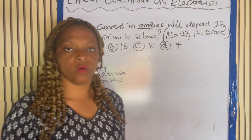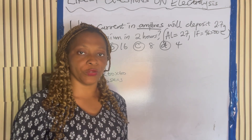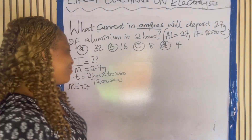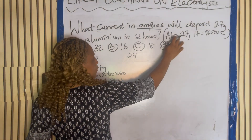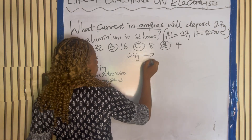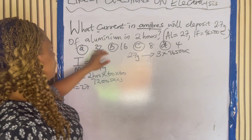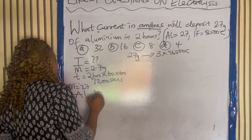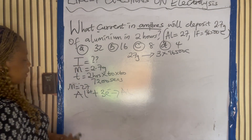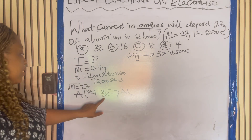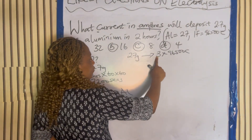I'm going to give you two ways to solve this. Using the first method: 27 grams of aluminium is deposited by 3 × 96,500 coulombs. We use 3 because the valency of aluminium is 3. So for 2.7 grams, the charge equals 2.7 × 3 × 96,500 divided by 27.